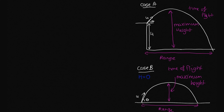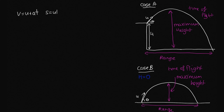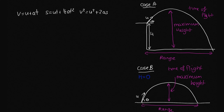In order to work out our equations, we'll be making use of our kinematic equations: V equals U plus AT; S equals UT plus a half AT squared; and V squared equals U squared plus 2AS. We'll consider the horizontal motion and the vertical motion separately.